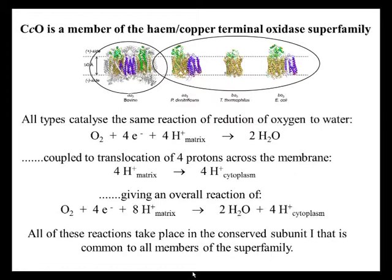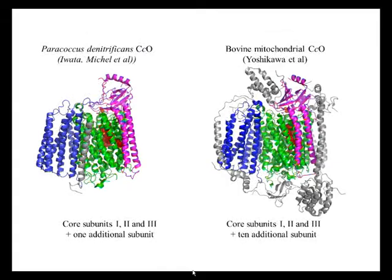The overall reaction is that oxygen is consumed to water, and eight protons are taken up on one side of the membrane — four of which are used to make water, and the other four are translocated across the membrane. All of these reactions, we know from various studies, take place in the largest subunit, subunit one, that is common to all members of this superfamily of enzymes.